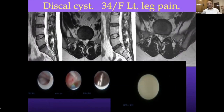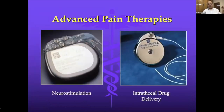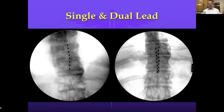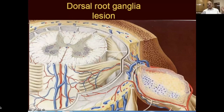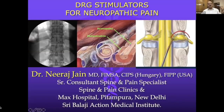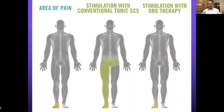Discal cysts can be de-roofed using laser through an endoscope — you go inside and just apply laser to de-roof the cyst. For advanced pain therapies in failed scenarios, spinal cord stimulation can be done with single or dual lead. The exciting new development is placing leads next to the DRG instead of the spinal cord itself, because the DRG is the powerhouse of the dermatome — that's where the problem lies, especially in post-surgical monoradicular pain.